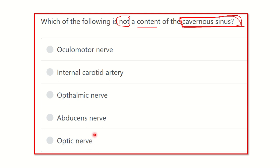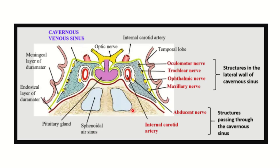First, let's look at the cavernous sinus. This is the right cavernous sinus and this is the left cavernous sinus. Between the two cavernous sinuses there is a pituitary fossa where the pituitary gland is located. Above the pituitary gland there is the optic chiasma, below it is the sphenoidal sinus, and on either side of the cavernous sinus is the temporal lobe of the cerebral cortex.